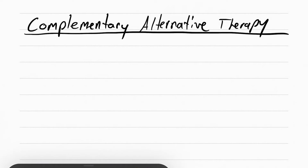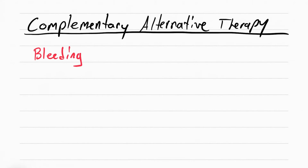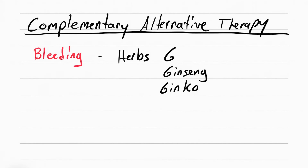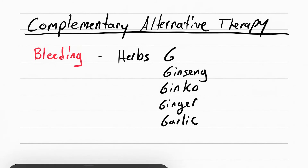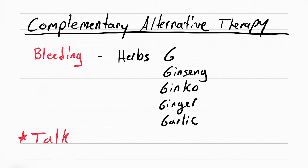You should also be aware of complementary alternative therapy. Sometimes patients are on herbs that cause bleeding. The herbs that cause bleeding all start with G: ginseng, ginkgo, ginger, and garlic. Make sure the provider is notified that the patient is taking these.